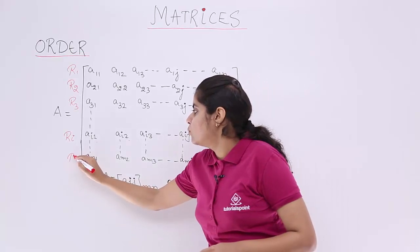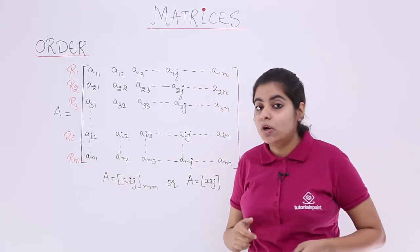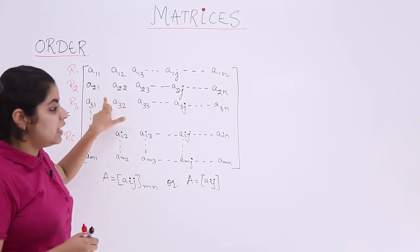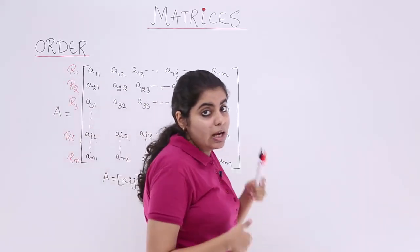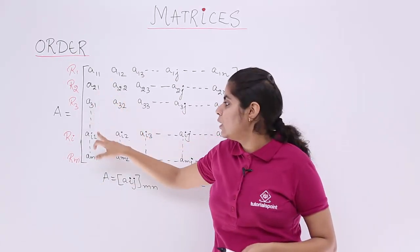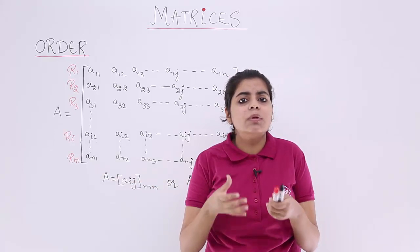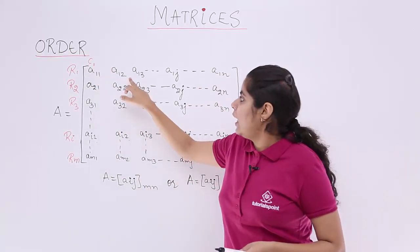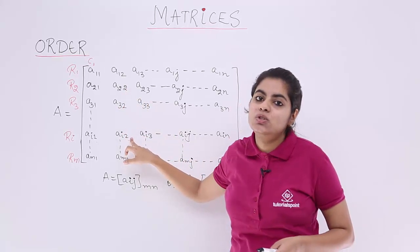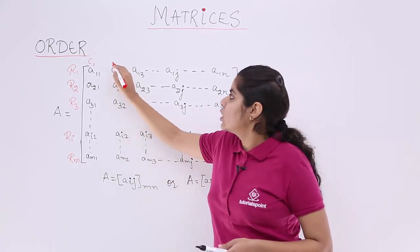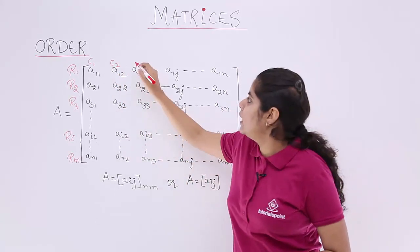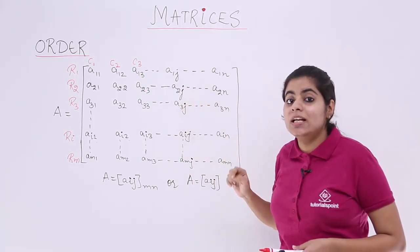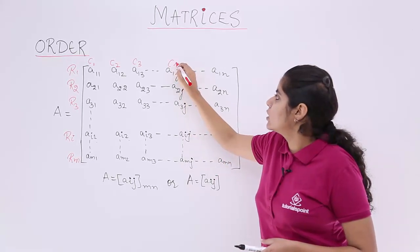Now what about the columns? Looking at the first column: a11, a21, a31, ai1, am1 — 1 is common, so it is column 1. The next column a12, a22, a32, ai2 — 2 is common, so it is column 2. Similarly, column 3 follows. For the general column a1j, a2j, a3j and so on — j is common, so it is the j-th column. Last, a1n, a2n, a3n — n is common, so it is column n.